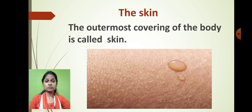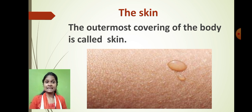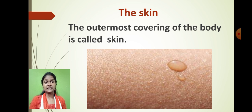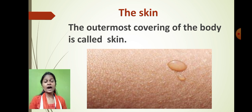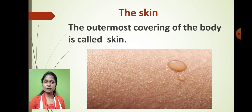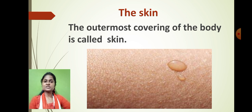You all are aware that during summer season or when we do any kind of heavy physical activity, we sweat a lot. Our normal body temperature is 37 degrees Celsius. While doing heavy physical activity or during summer season, our body temperature increases. When our body produces sweat, which is present in the form of water on our skin, it cools down our body and brings our body temperature back to normal. That's why sweating is also important.